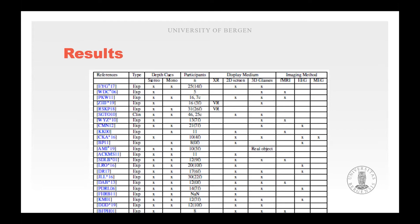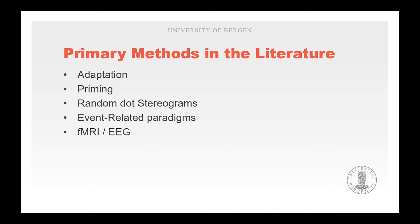Here's a table of some of the articles — all of the articles are in our published article, but the table contains participant number, display medium, and imaging method to provide an overview. The primary methods in the literature were EEG and fMRI, with common paradigms being adaptation, priming, and random dot stereograms.